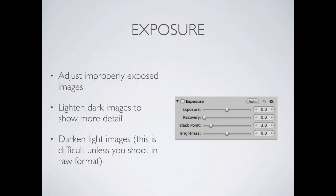Exposure adjustment is especially useful with raw format files, which capture more than what's visible and allow corrections. If a shot is too bright or too dark, you can adjust the exposure slider to correct it. It's easy to lighten dark images, but much harder to darken light images and recover detail. Here, the image on the left is too dark, and the image on the right shows the corrected exposure — we've brightened it up.